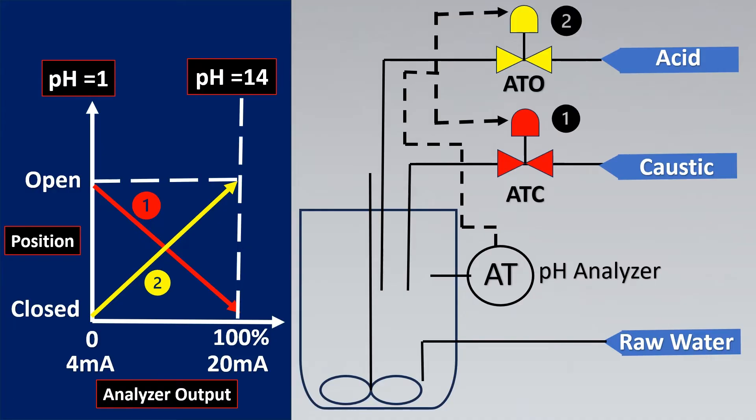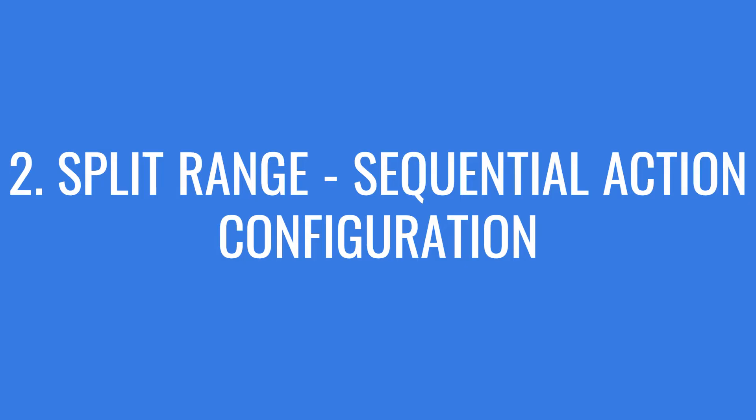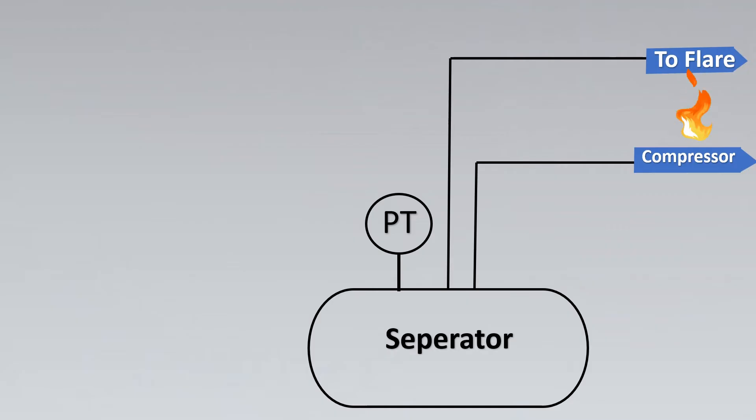Now let us look at the second amazing example of a sequential split range control. In sequential split range control imagine you have a separator here. Now here is a pressure transmitter to it and this separator is basically going to separate the liquid and the gas. As soon as the pressure increases this gas is going to go to the compressor and further down the line. If abnormal conditions exist then it will go to flare so that the separator itself does not burst. That will be flared out, basically it is like a safety system to it.